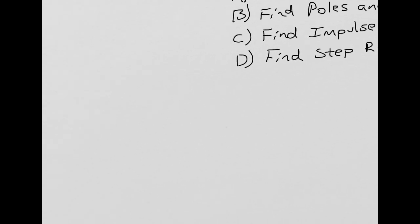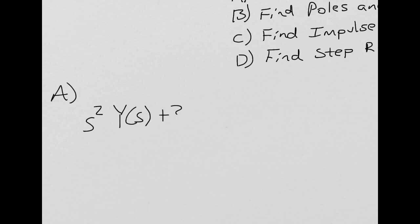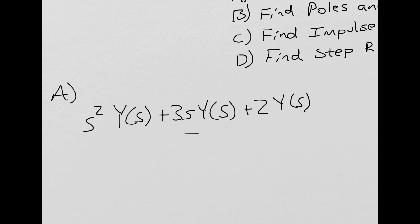So first we'll go ahead and find the transfer function. In order to do that, we'll transform that ordinary differential equation. What we'll get is: s² Y(s) + 3s Y(s) + 2Y(s) = sX(s) − X(s).